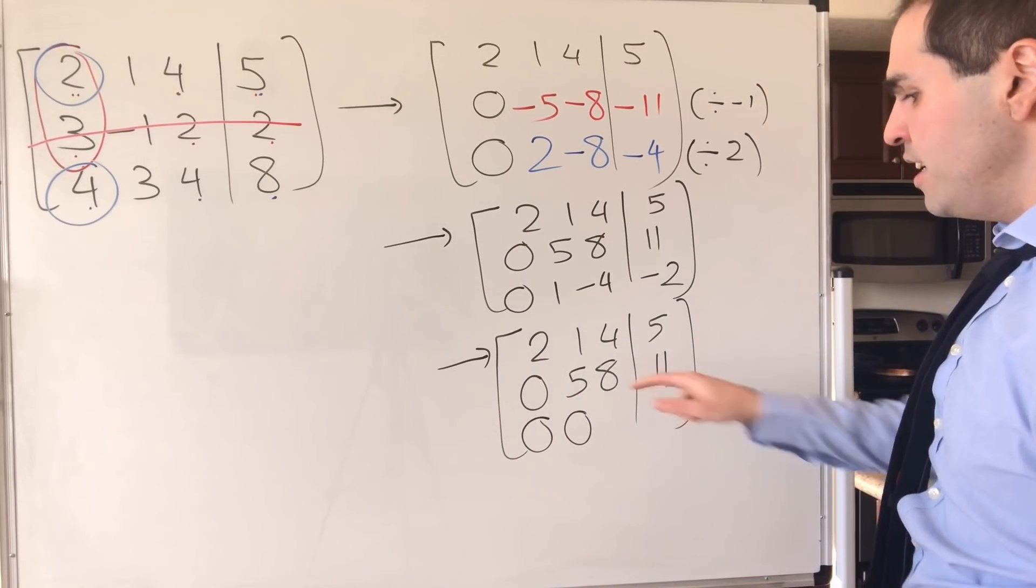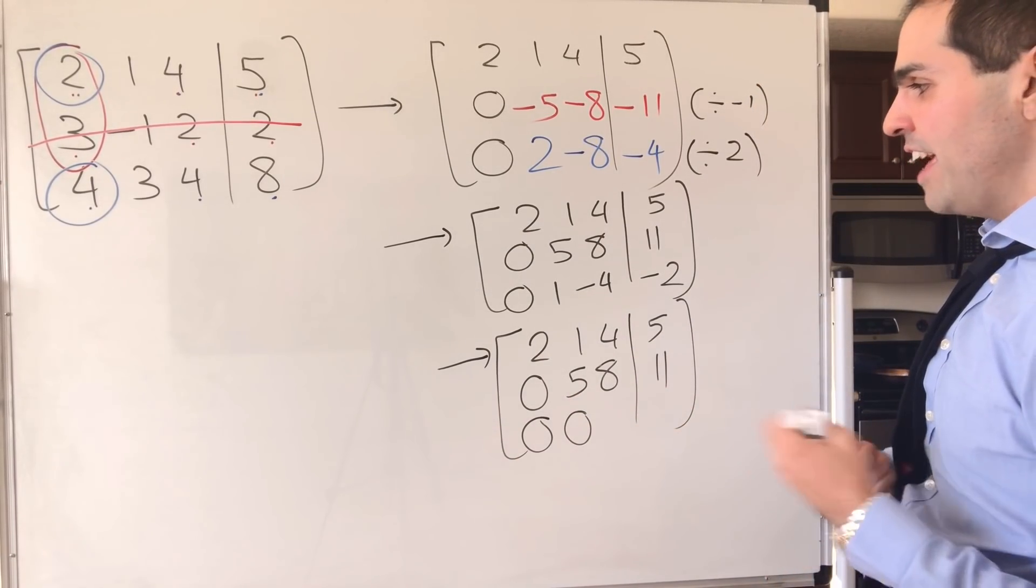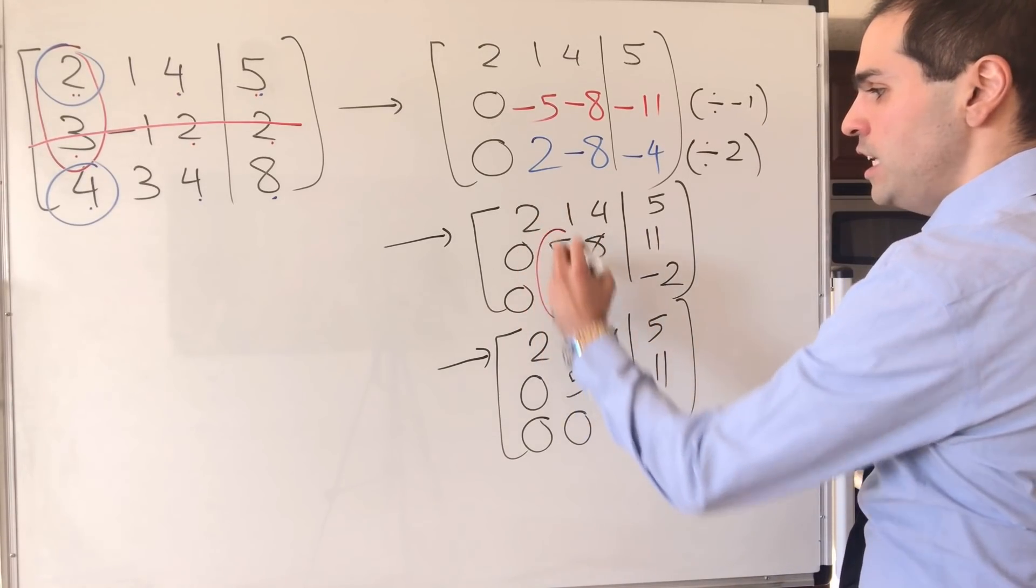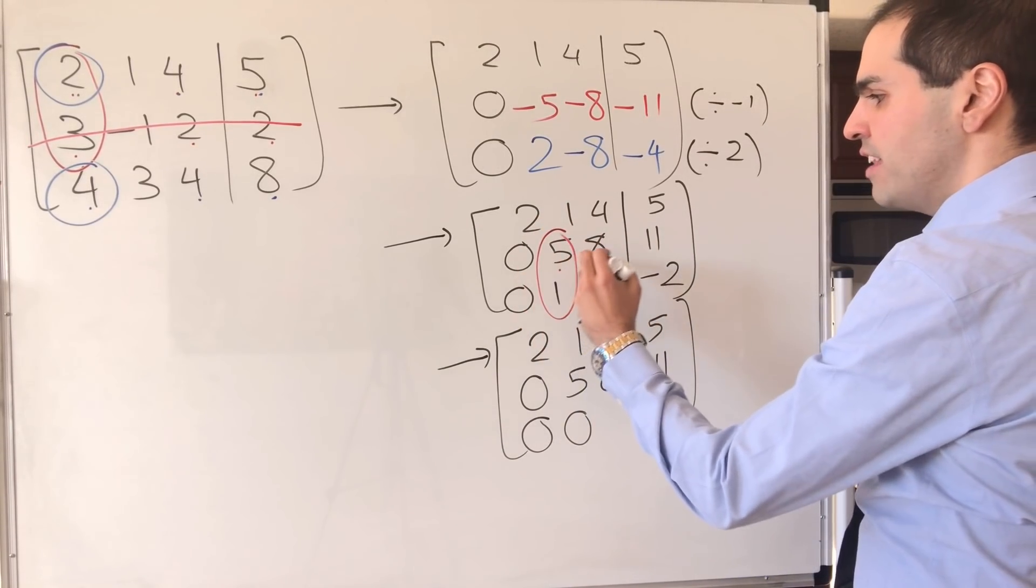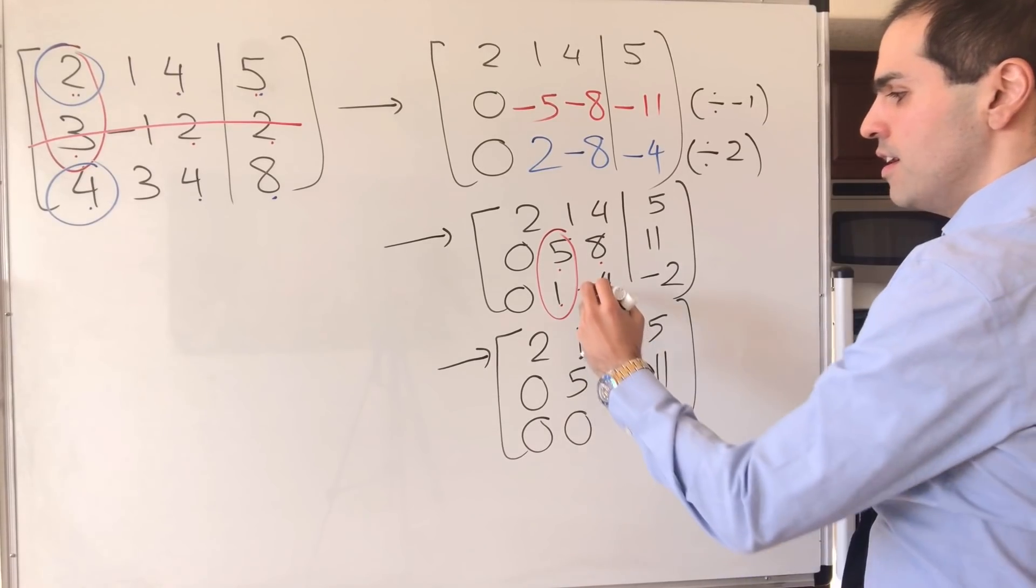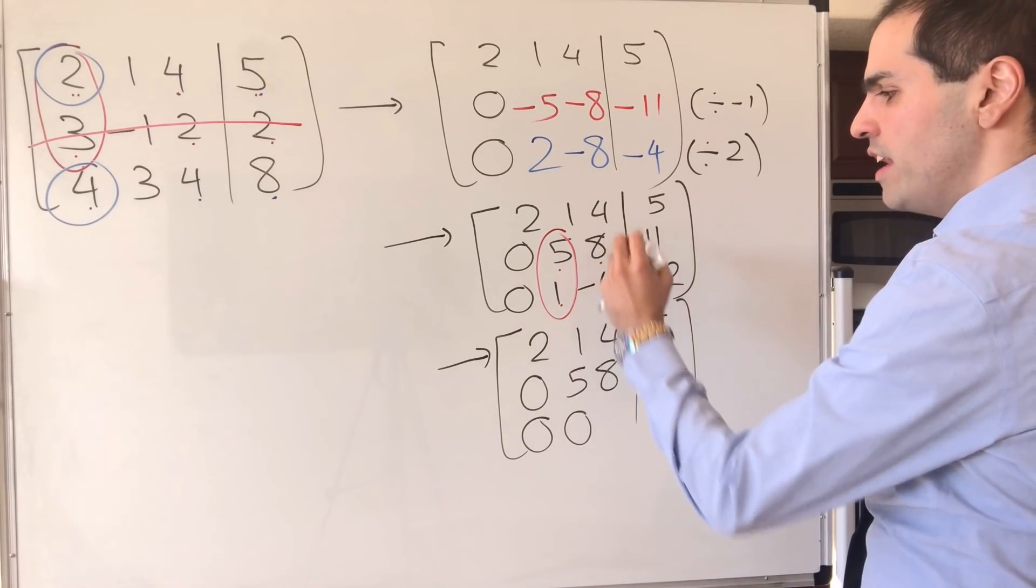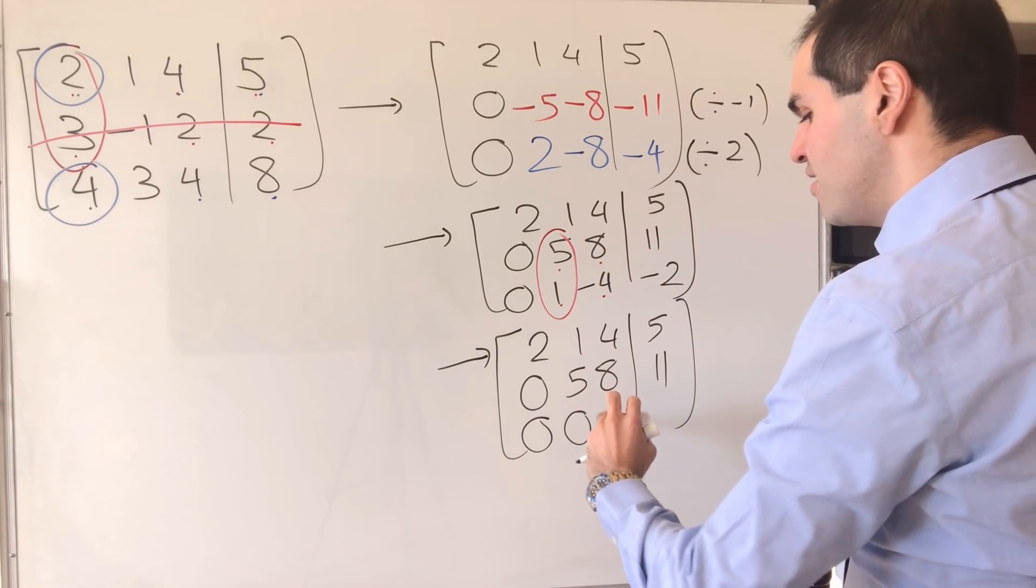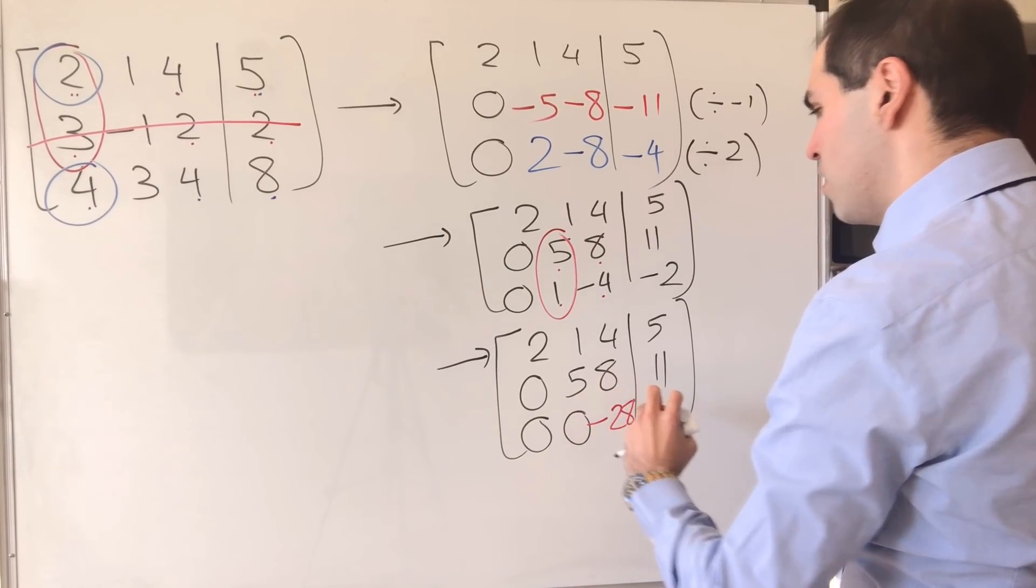But then the question is, what do you put for the next entries? Well, keep this 5, 1, and take the determinant of the rest. So, minus 20, minus 8. That is minus 28. And then, forget the second column.